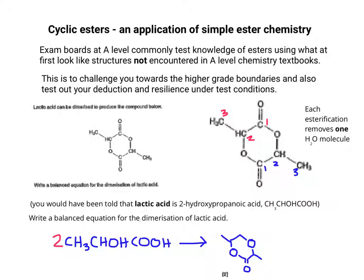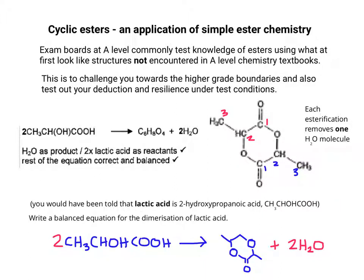Because each esterification removes one water molecule, and there must have been two of them happening because you have two lactic acid molecules involved, you should hopefully end up with the balanced equation shown. Let's have a quick look at the mark scheme. It looks like what we put matches what the mark scheme wants. Notice that they have a molecular formula on the right hand side — in an exam you can normally do any type of formula, but the really important thing is to make sure it's unambiguous.